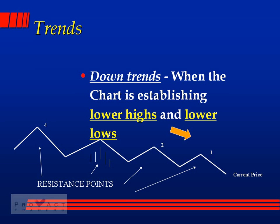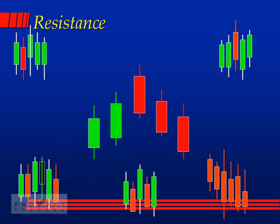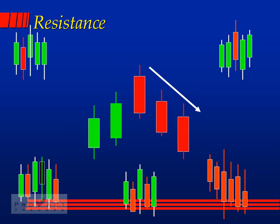Support candles can look like anything — any combination — as long as there's one candle sticking down. In a downtrend the opposite happens: candlesticks form lower highs and lower lows. Those are called resistance points — four, three, two, one all coming down. Resistance is one candle that sticks up with a wick, with at least one candle on each side, and preferably two on each side for strong resistance.